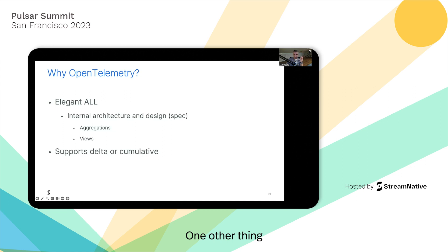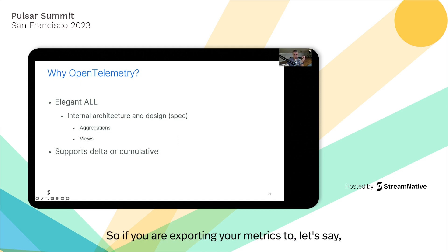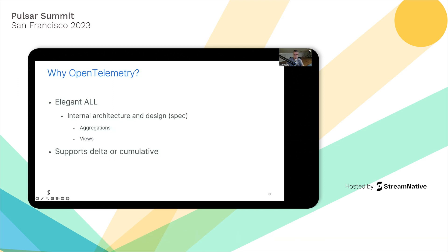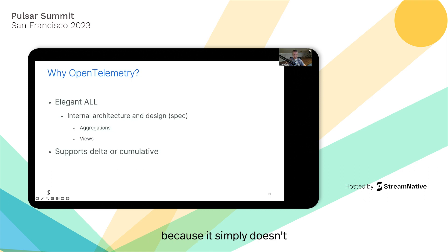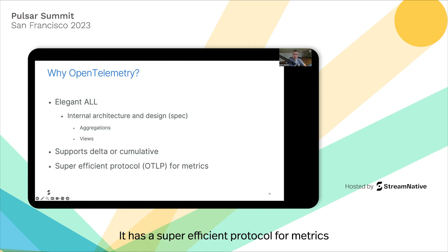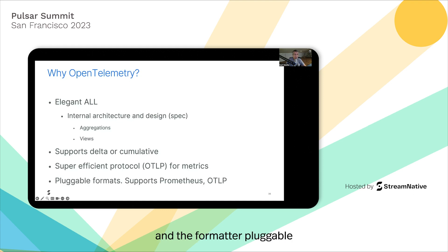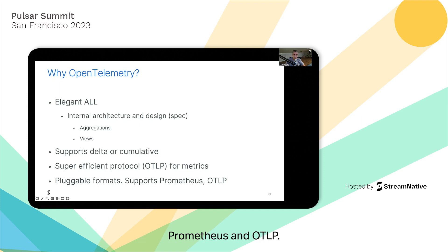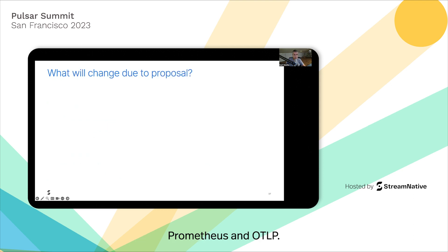One other nice thing: OpenTelemetry supports Delta, not just cumulative. So if you're exporting metrics to Elasticsearch or OpenSearch — which don't have the notion of a single time series — Delta is the only way to go. It also has a super efficient protocol for metrics called OTLP, much more efficient than Prometheus. And the formats are pluggable — currently it supports Prometheus and OTLP.